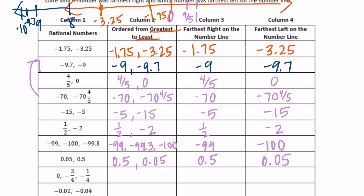Zero, negative 3 fourths, negative 1 fourth. So 0 is the greatest, then next closest to 0 would be negative 1 fourth, and then negative 3 fourths. Furthest to the right on the number line is 0, furthest to the left is negative 3 fourths. And negative 2 hundredths, negative 4 hundredths — the greatest number is negative 2 hundredths, then negative 4 hundredths. Furthest to the right is negative 2 hundredths, furthest to the left is negative 4 hundredths.